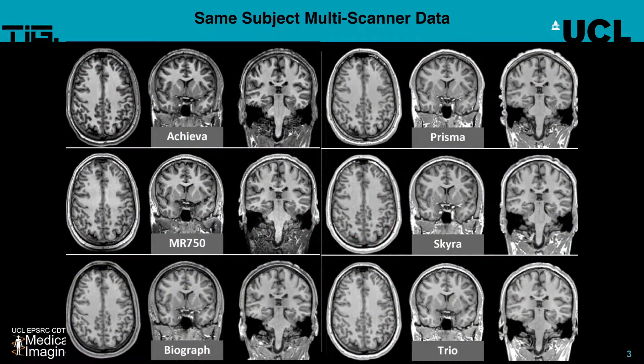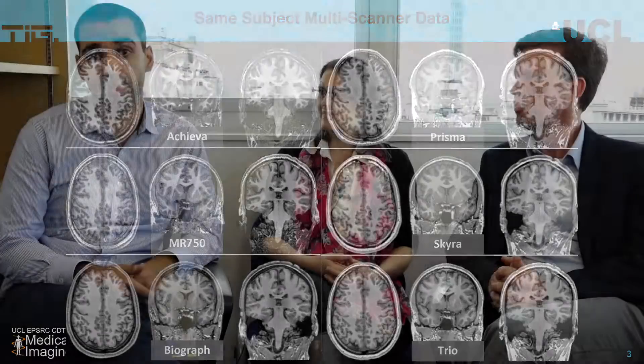We need tools to measure volumes, which is really difficult because the contrast varies significantly from scanner to scanner. So the idea of this project is to learn the differences between scanners — we want to go back to the underlying MRI physics, simulate images, and then use those simulated images to predict subtle differences between MR scanners. I'd like to know Ivana's opinion on why physics is an important topic in this PhD project.